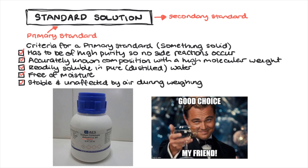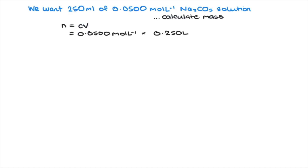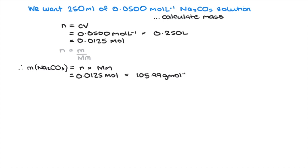To prepare a standard solution — say 250 mL of 0.05 mol/L sodium carbonate solution — the mass needs to be determined. Using n = cv, we get the number of moles. Then, using mass = moles × molar mass, we can calculate the required mass by plugging in the values.